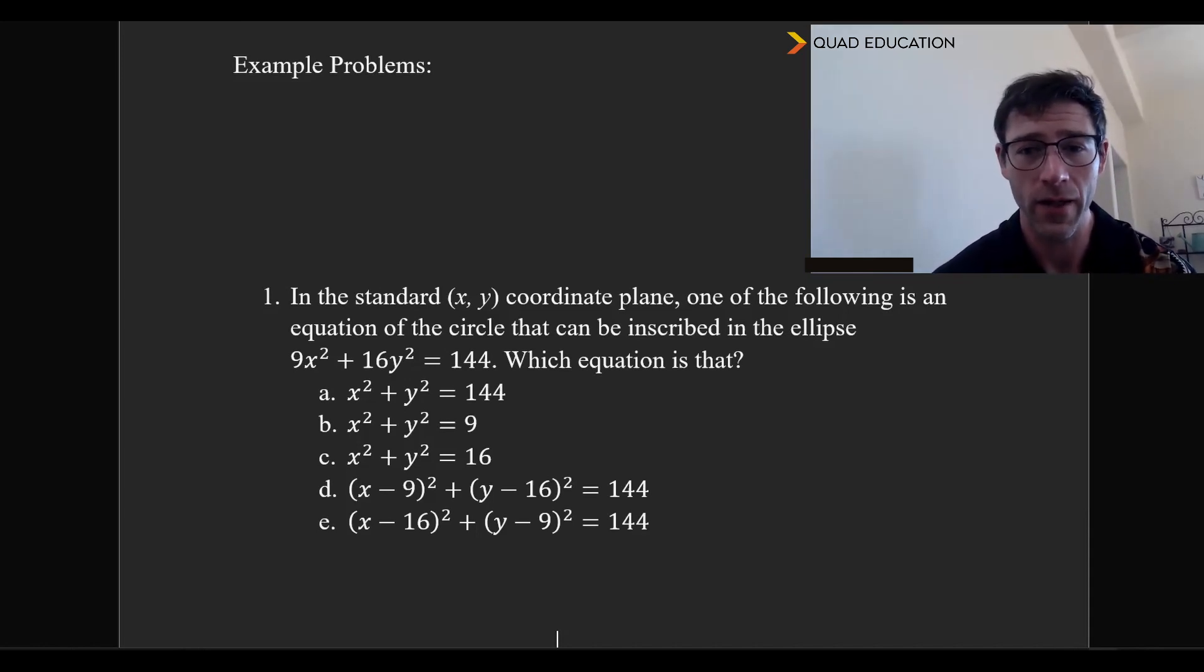So in the standard xy coordinate plane, one of the following is an equation of the circle that can be inscribed in the ellipse 9x² + 16y² = 144. Which equation is that? This is a really interesting problem.